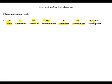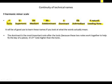It will be of good use to learn these names if you look at what the words actually mean. The dominant is the most important note after the tonic. Counting from the tonic: one, two, three, four, five - the dominant is the fifth.